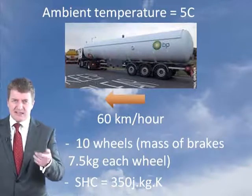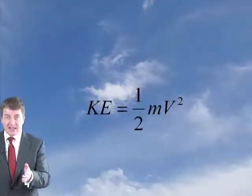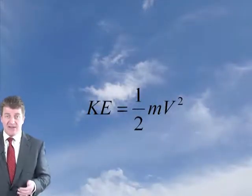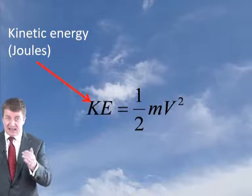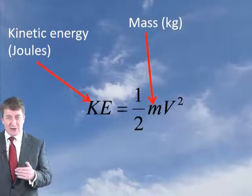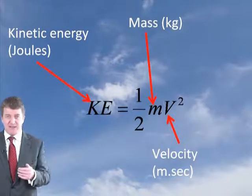So how would you determine the temperature of the brakes? The question is really asking you to determine the kinetic energy the vehicle possesses, work out the kinetic energy of the vehicle, and then convert all that energy into heat energy in the brakes. First of all, we need to determine the kinetic energy of the vehicle. The kinetic energy of a vehicle is half mv squared, where KE is the kinetic energy in joules, m is the mass in kilos, and v is the velocity in metres per second.